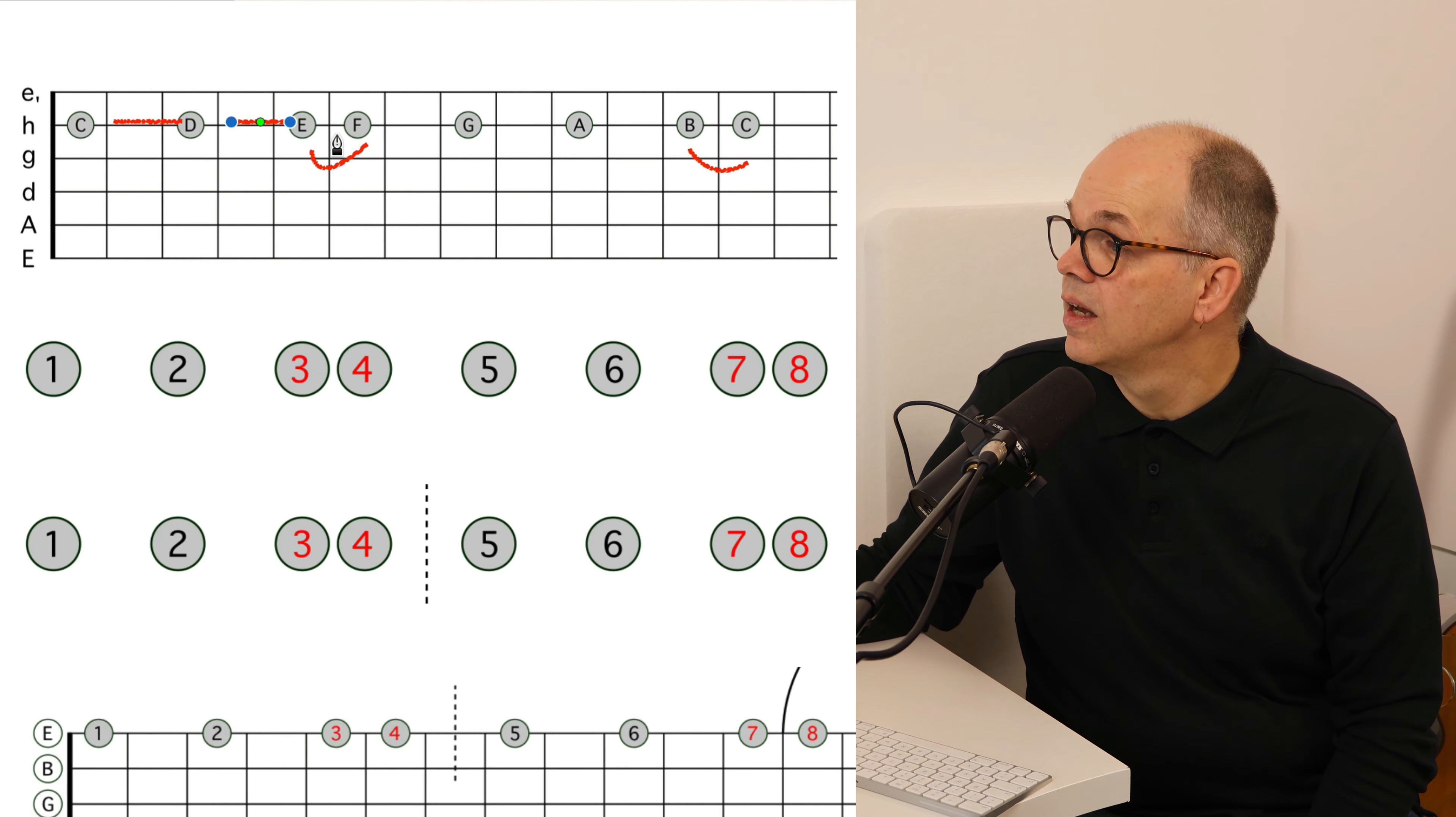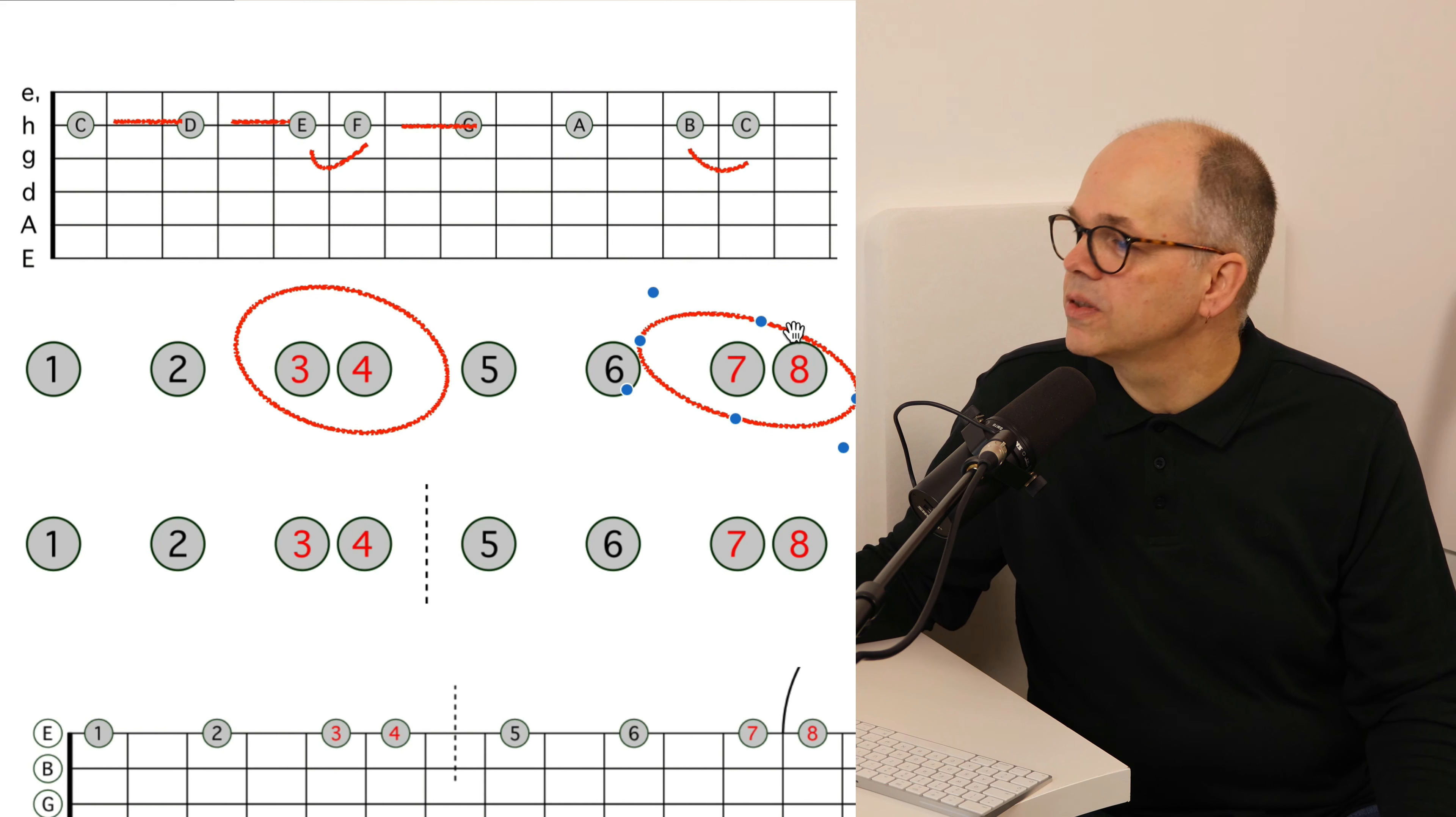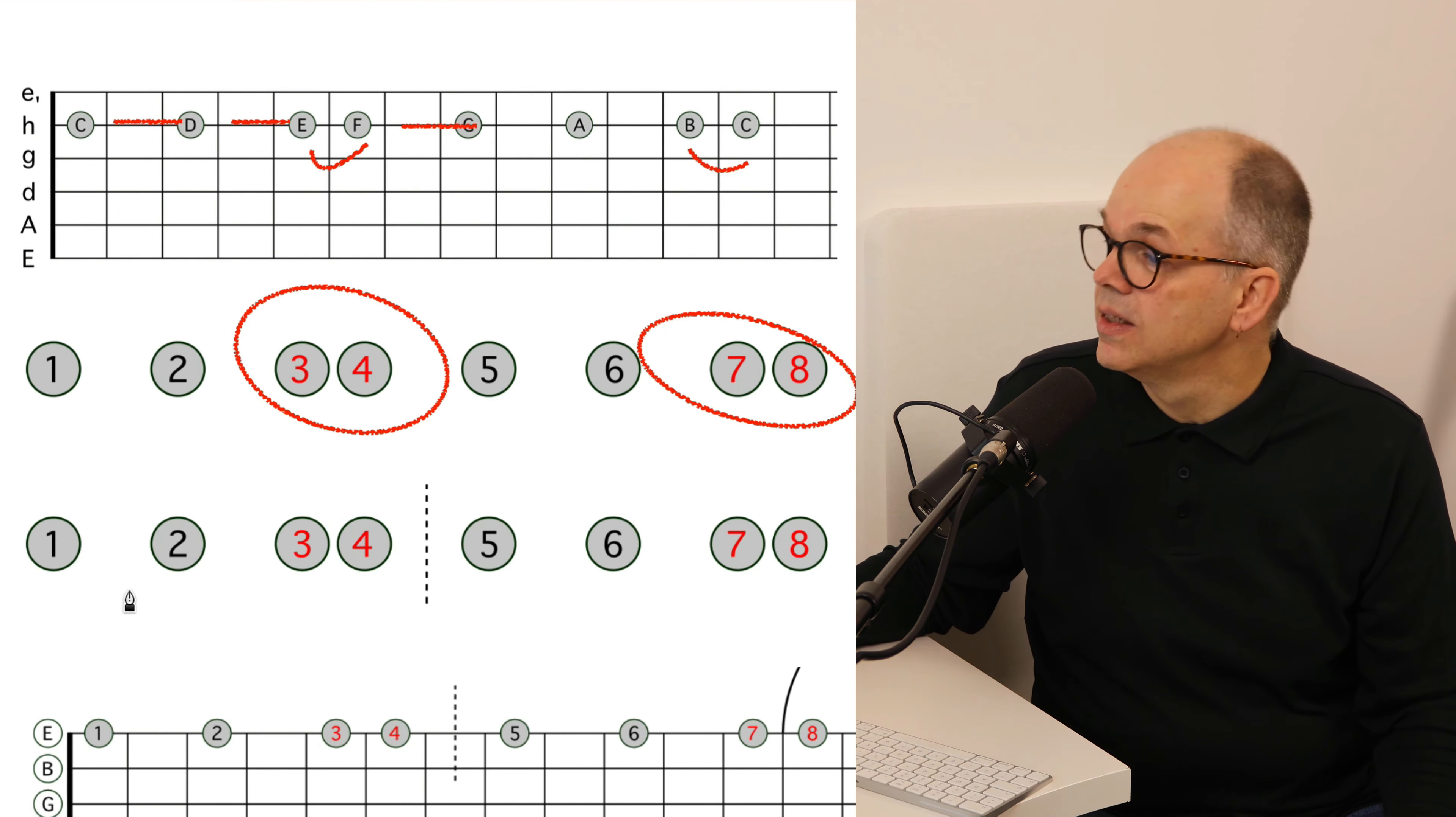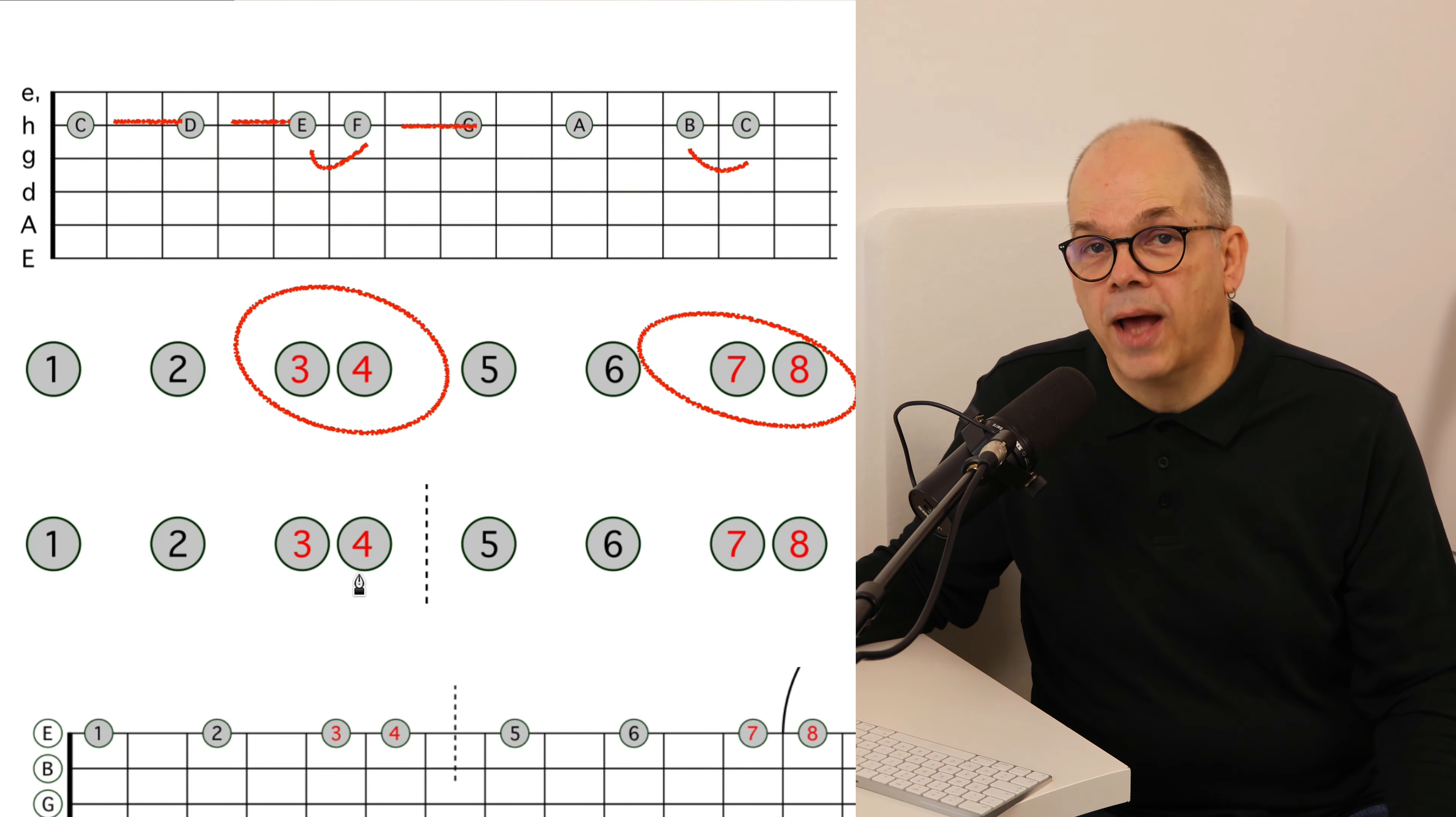All the others are whole steps. And if I write that simply with numbers, you'll see the half step in position 3, 4 and 7, 8. What is very nice, if we now divide these eight notes, we have two so-called tetrachords with four notes and the half steps are always on the last two notes. 1, 2, 3, 4, 5, 6, 7, 8.